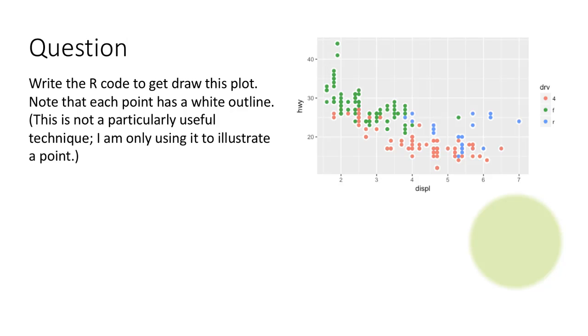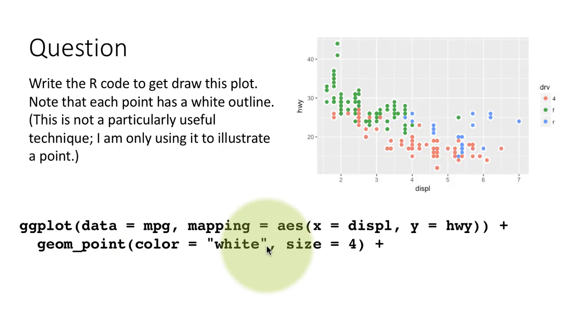That's what happened here. The first layer, color equals white—it's not mapped to any aesthetic. Notice that color is outside of any aesthetic, so it's a fixed color of white, size equals 4. I wanted it slightly bigger, so that is what is generating those white circles. In fact, if I had plotted only this much, you would have seen all white points. But I'm adding another layer of points.